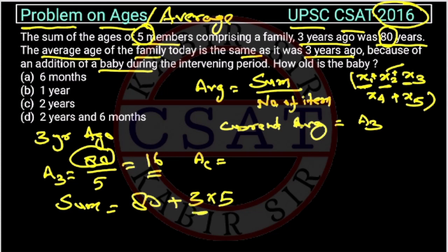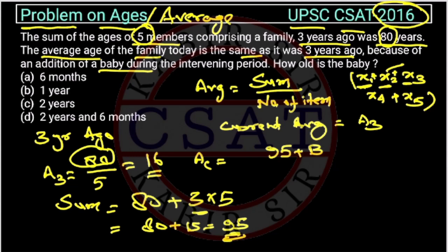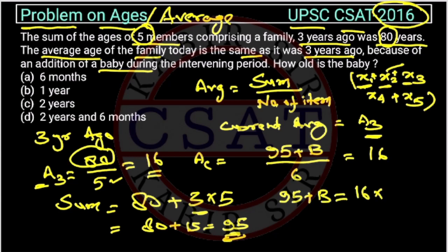So the current summation of their ages is 95. Now the number of members is 6 — previously 5, now a baby has been added. The current average equals the old average, which was 16. So, 95 plus b equals 16 multiplied by 6, which gives 96. Therefore, the age of the baby is 96 minus 95, which equals 1.